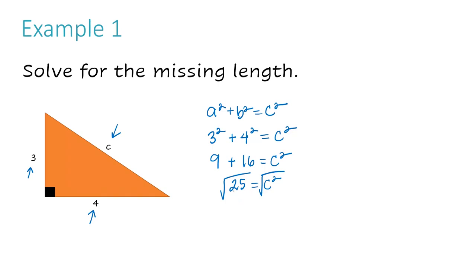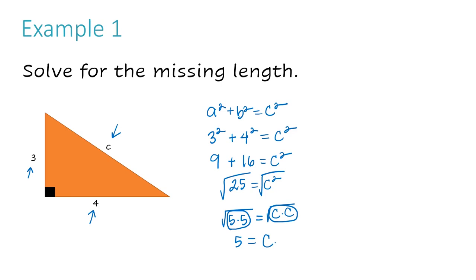Now I'm going to simplify as much as I can. The square root of 25 is great because 25 is a perfect square — that turns into 5 times 5. When dealing with square roots, you're looking for groups of 2 that you can take out from under the radical. With two 5s, I can take those out and that becomes the whole number 5. On the right side, the square root of C squared is like C times C — that's a group of 2, so C comes out and the radical falls off. So C equals 5.